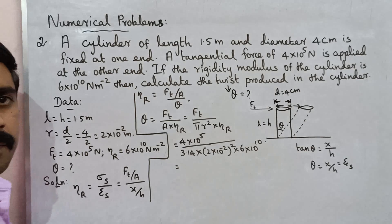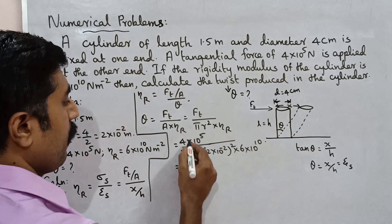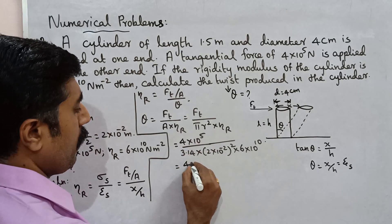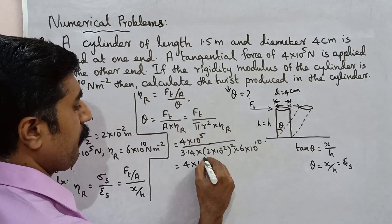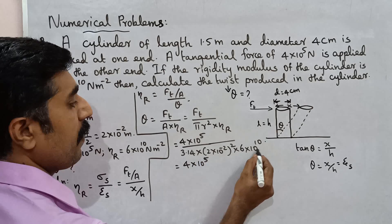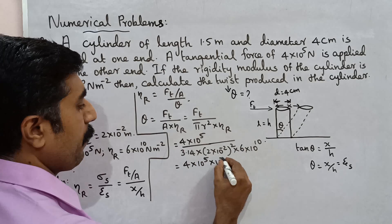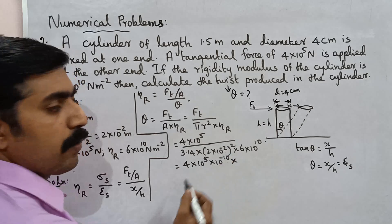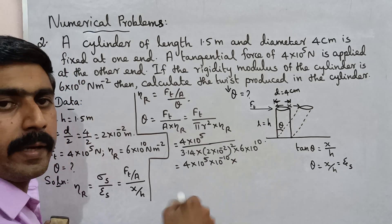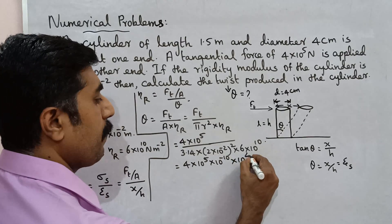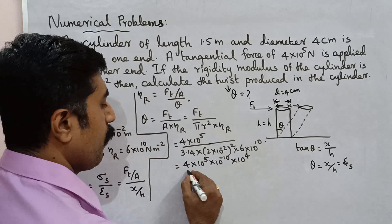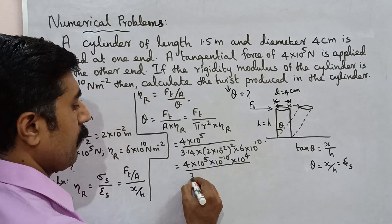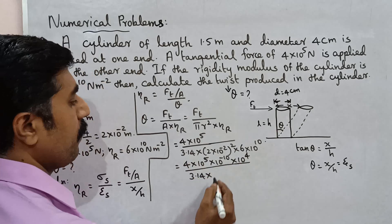Now calculating: numerator is 4 into 10 power 5, and denominator has 10 power 10 into 10 power minus 2 squared — that is 10 power minus 4 — giving 10 power plus 4 in denominator. Divided by 3.14 into 4 times 6 into 10 power 10.